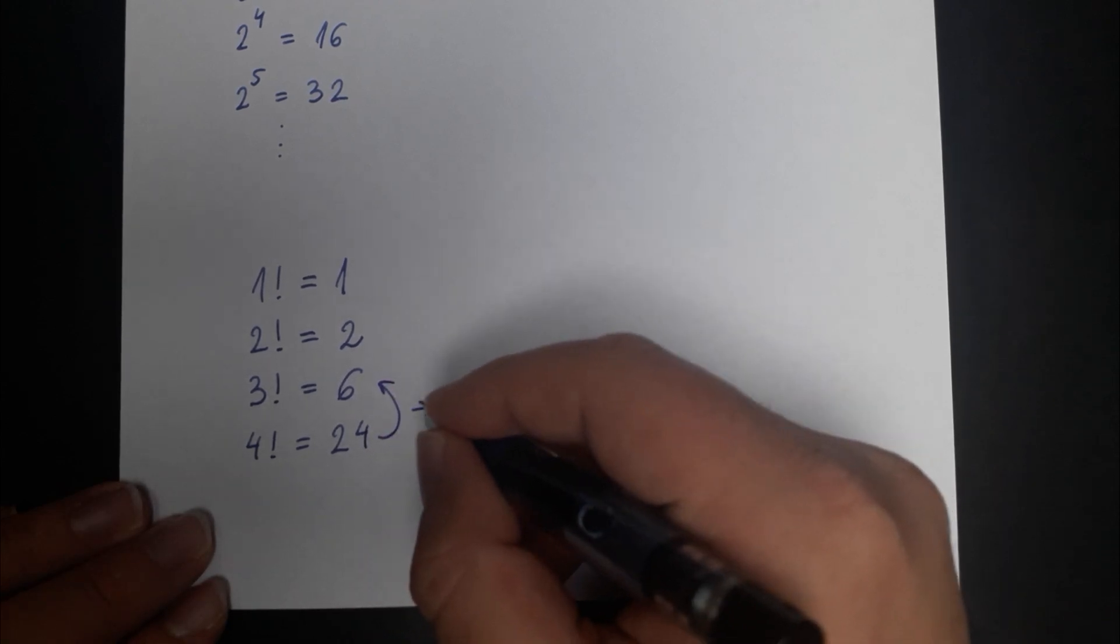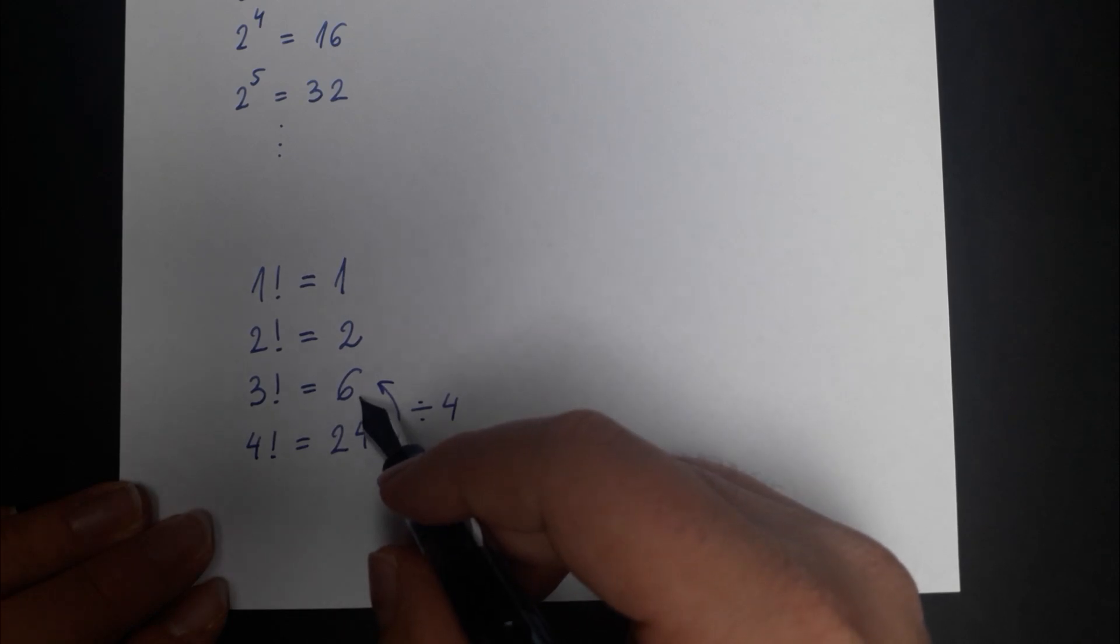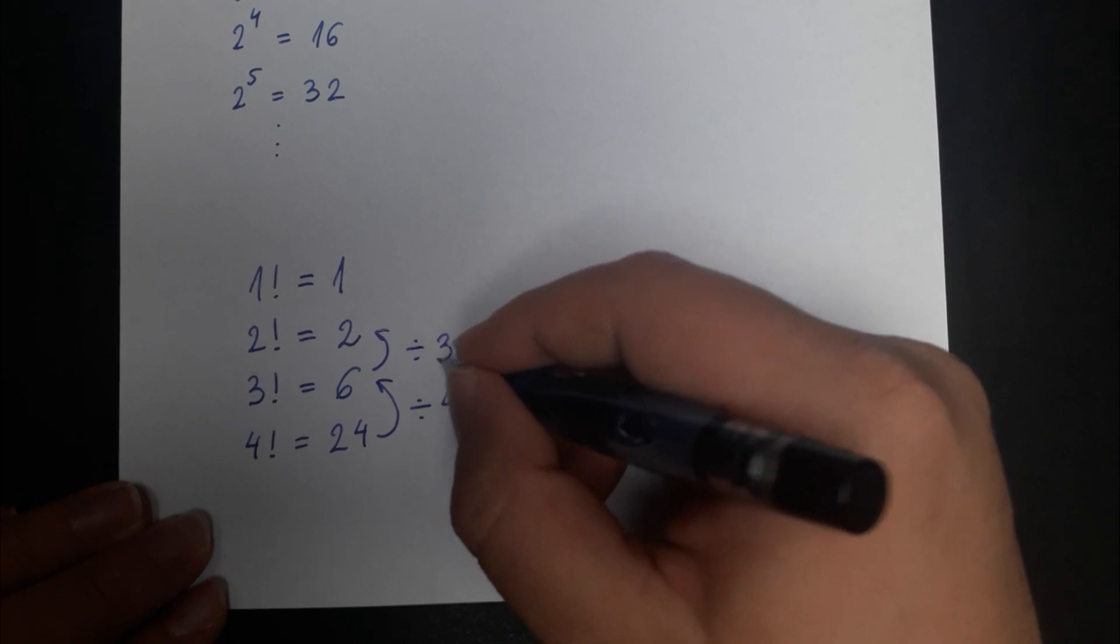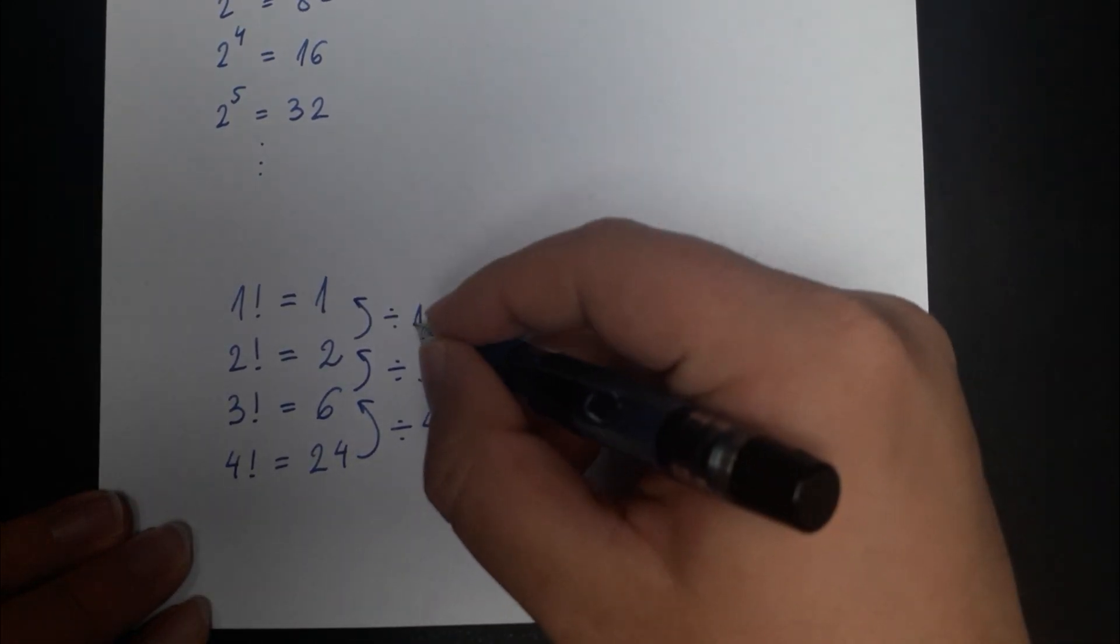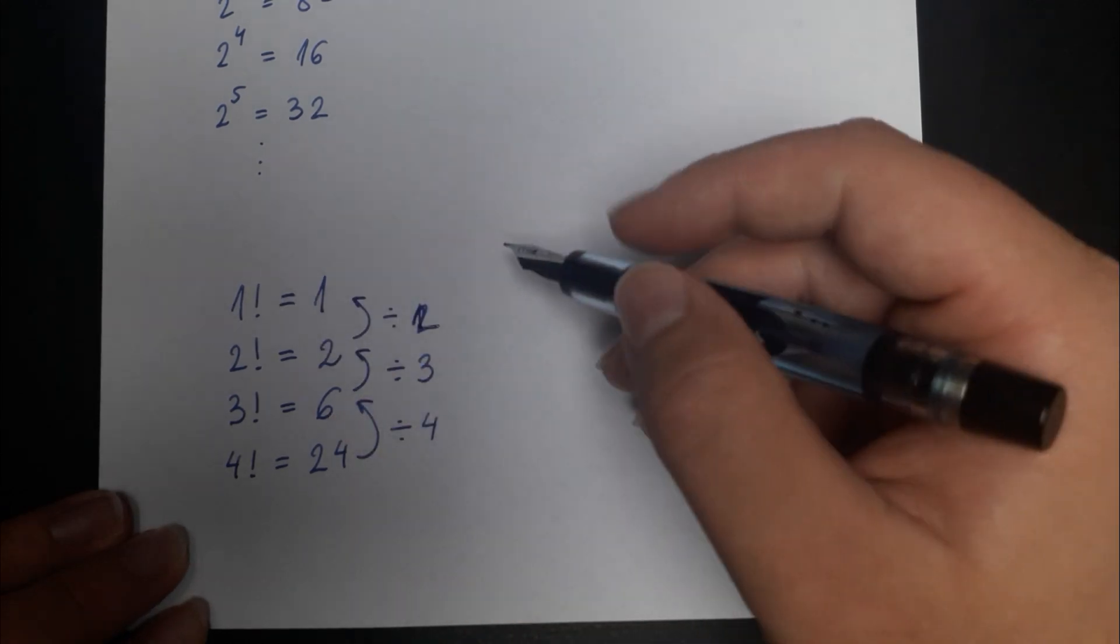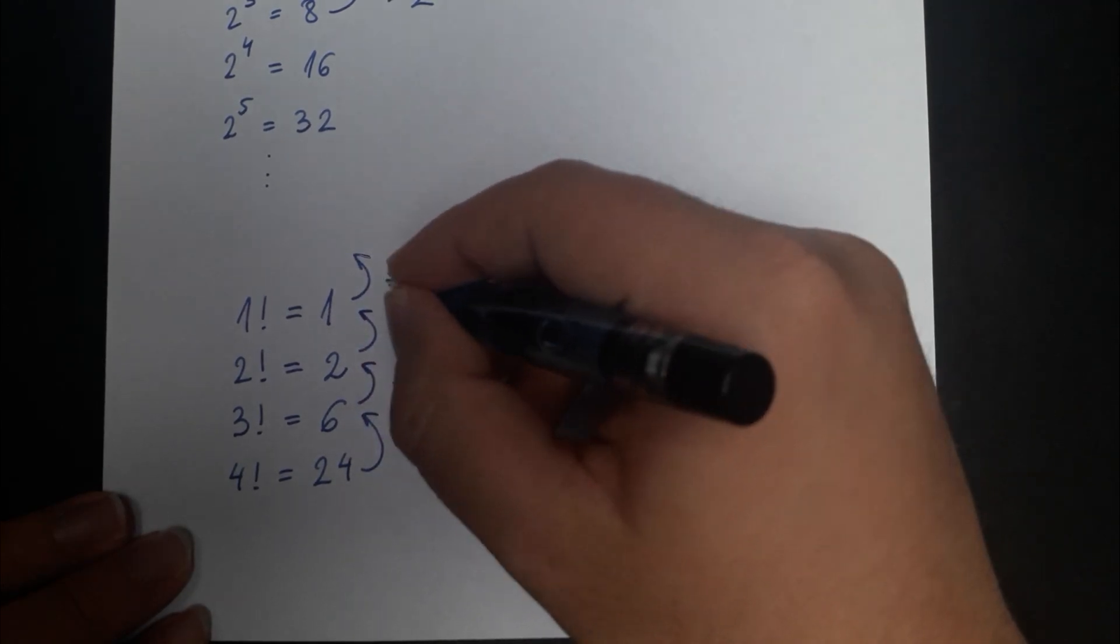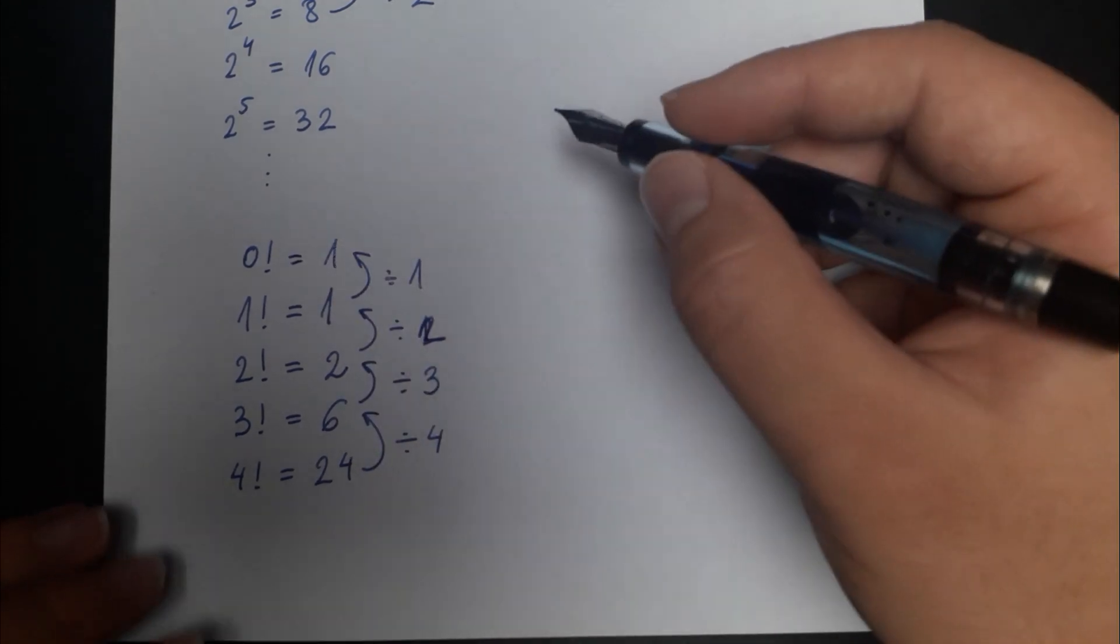I can divide by 4 and then I get that 3 factorial is equal to 6. If I then divide by 3 I get that 2 factorial is equal to 2. And then if I divide by 2 I get that 1 factorial is equal to 1. By dividing by 1 I get that 0 factorial is equal to 1.